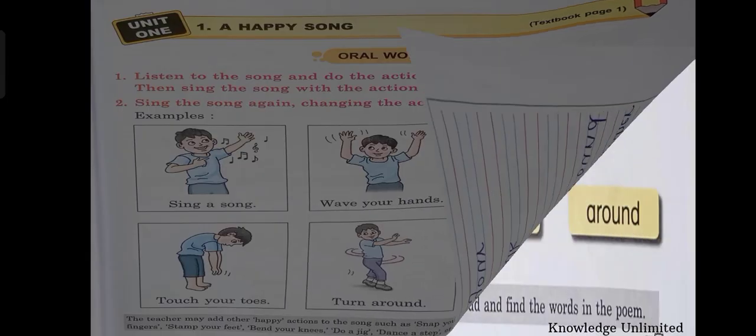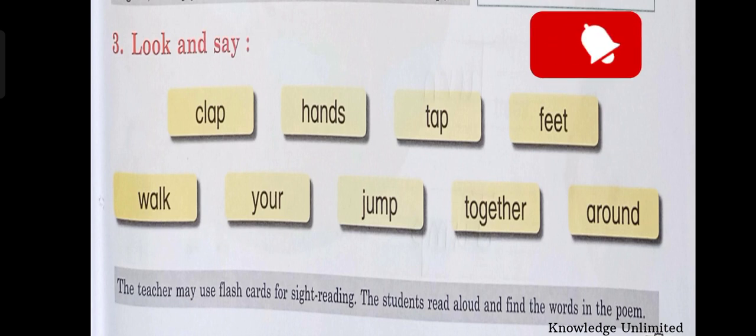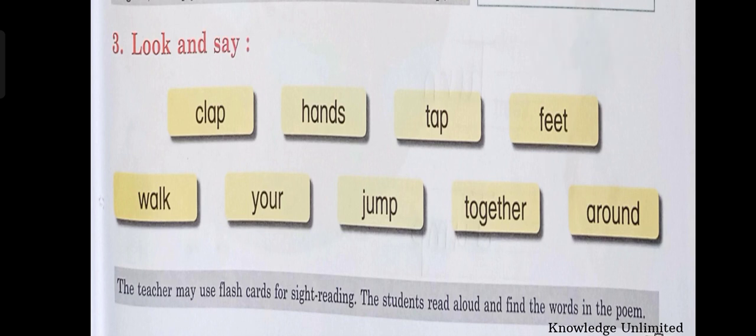So these are the hard words in your lesson. You need to copy them in your workbook. Now we have the same words here, children — look and say. You need to learn these words. Again the same words: clap, hands, tap, feet, walk, your, jump, together and around.